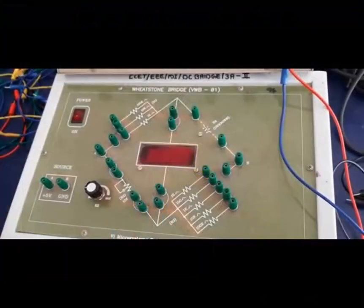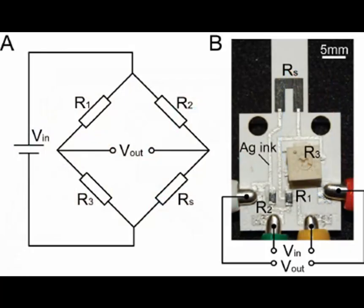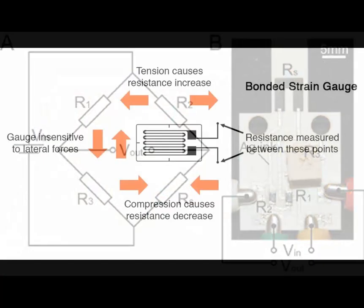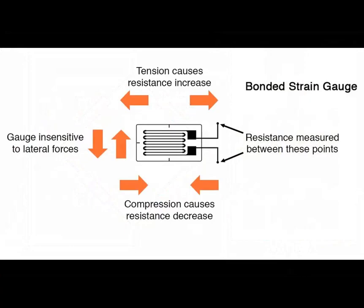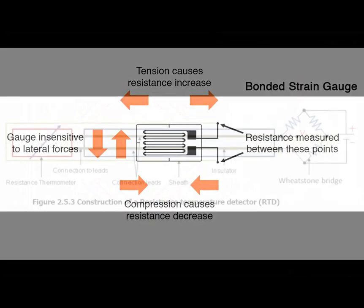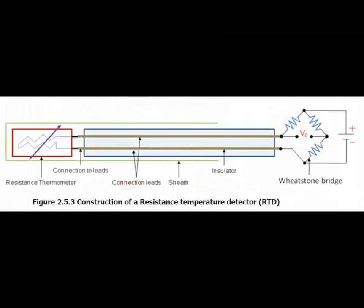Wheatstone bridges are commonly used in various fields, including electronics, physics, and engineering, for precise resistance measurements. For example, they're used in strain gauge sensors to measure small changes in resistance due to mechanical strain, or in temperature sensors where resistance varies with temperature.